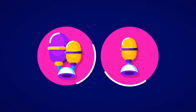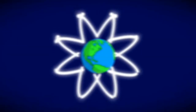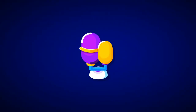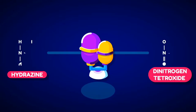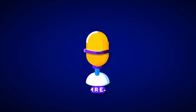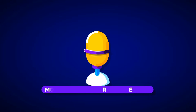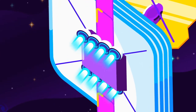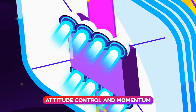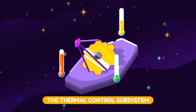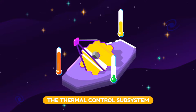Webb has two types of rocket thrusters. One kind is called secondary combustion augmented thrusters, used for orbit correction. Webb has two pairs of them, and they use hydrazine and dinitrogen tetroxide as fuel and oxidizer respectively, making them bipropellant thrusters. The other kind is called MRE-1, or monopropellant rocket engine, since it only uses hydrazine. There are eight MRE-1s on Webb, used for attitude control and momentum management. The thermal control subsystem maintains the operating temperature of the spacecraft bus.